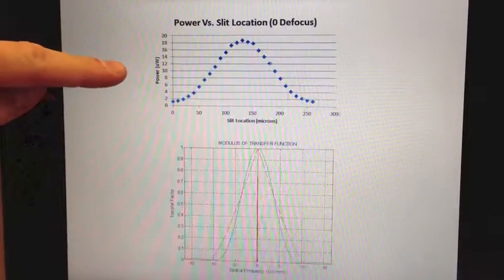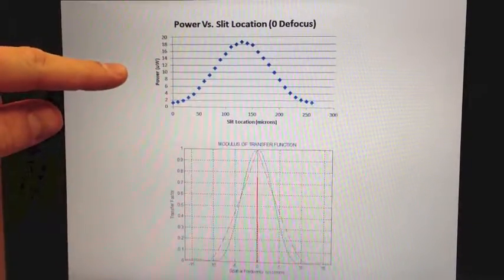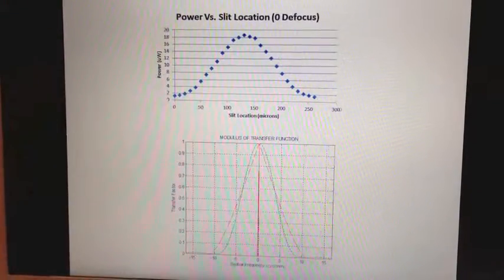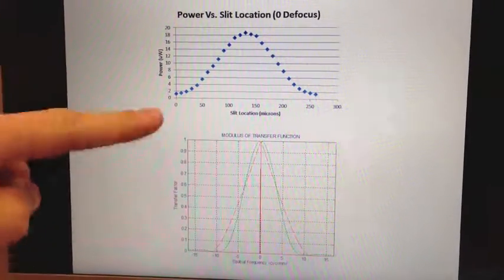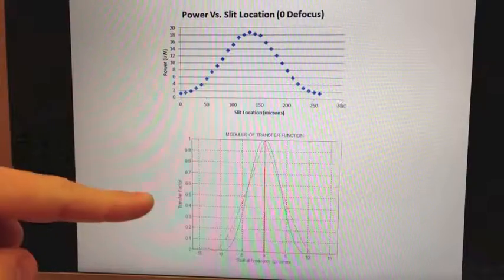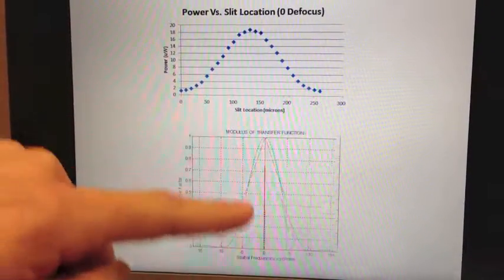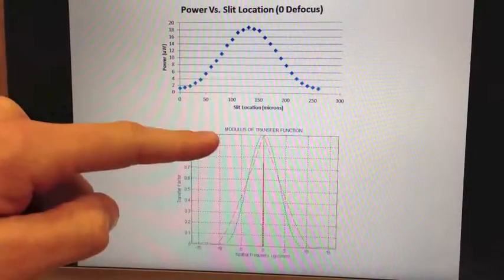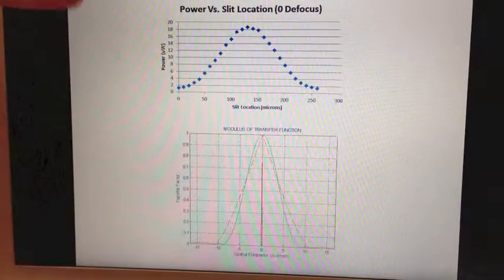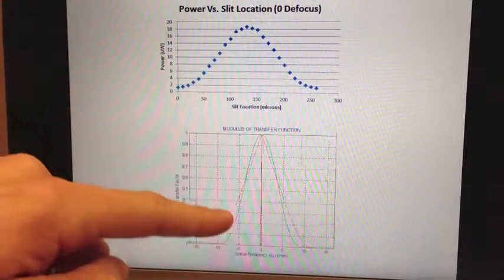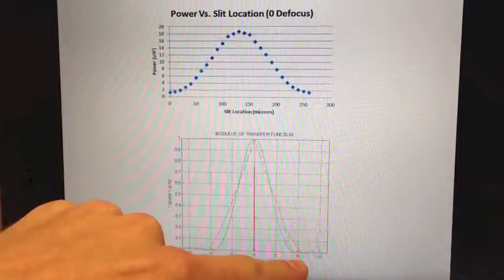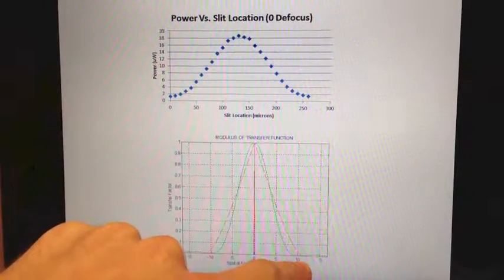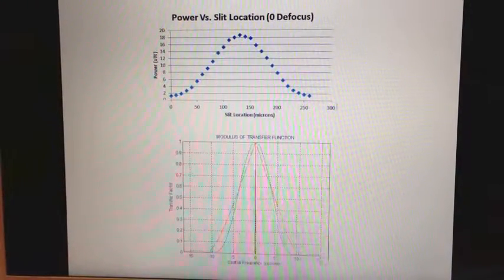This plot on top shows our measured line spread function. We took that data and plugged it into MATLAB code, and this is what we got. The red dotted line shows the diffraction limit, and the blue-green line shows our MTF. It closely resembles the diffraction-limited system, which makes sense because the cutoff frequency is at about 11 line pairs per millimeter, as expected.